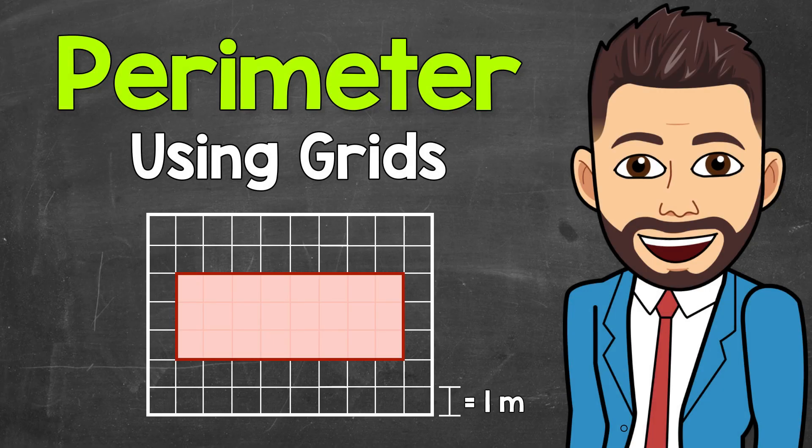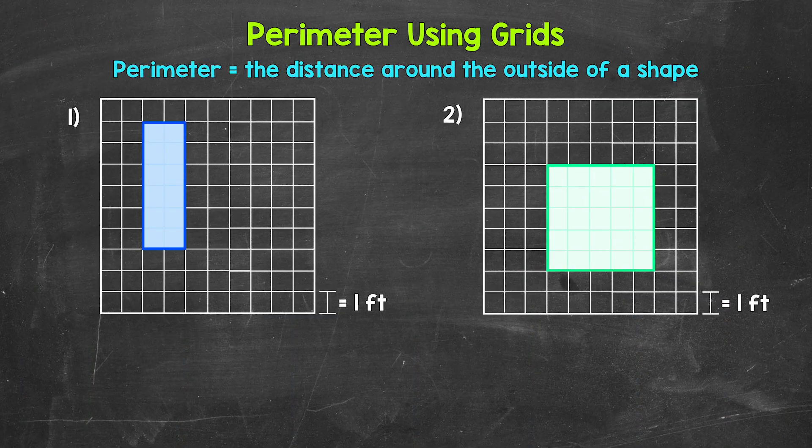Welcome to Math with Mr. J. In this video, I'm going to cover how to find the perimeter of a shape using a grid. And remember, perimeter is the distance around the outside of a shape.